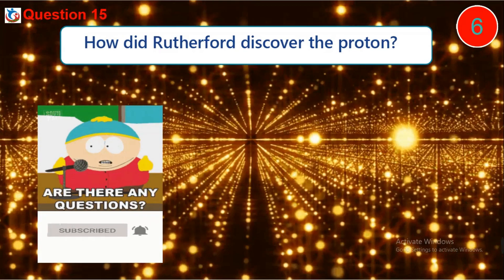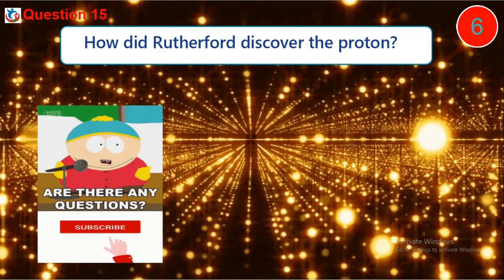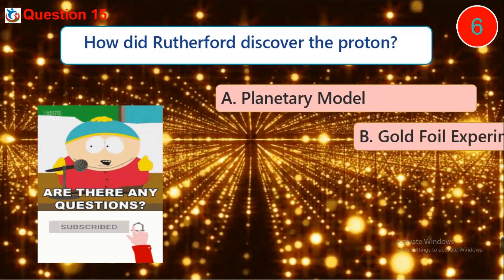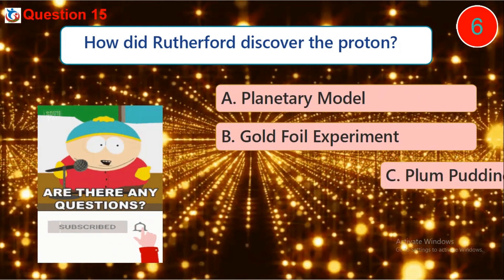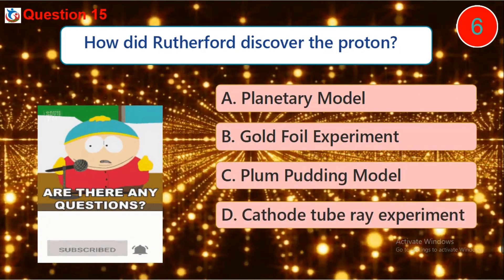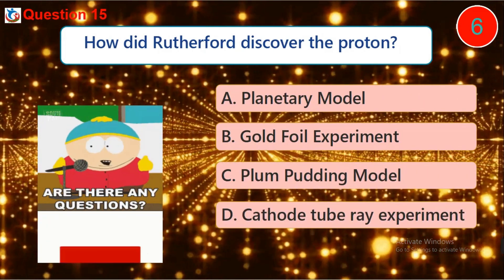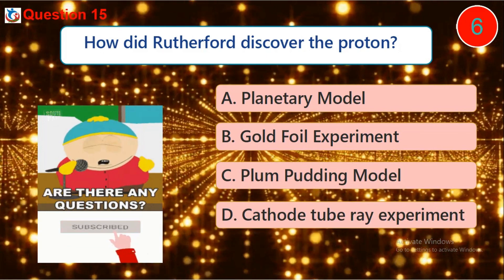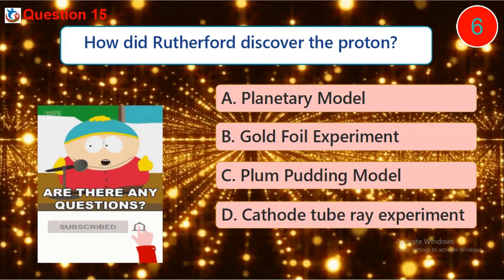Question 15. How did Rutherford discover the proton? A. Planetary model. B. Gold foil experiment. C. Plum pudding model. D. Cathode ray experiment.